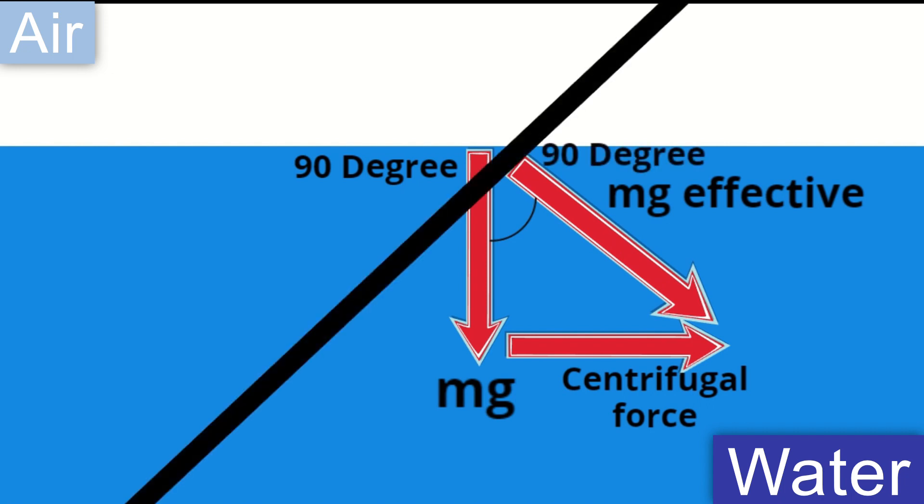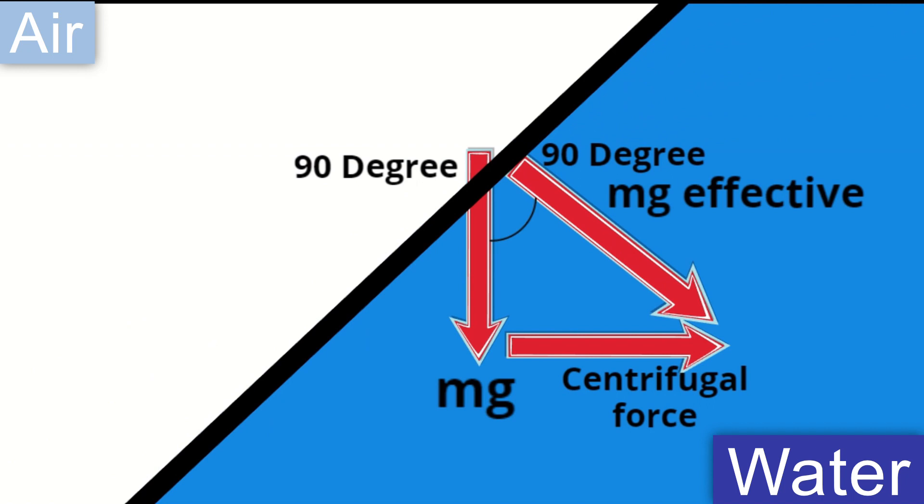Hence, what is horizontal for the water is actually sloping for us. This is what causes the sloping downwards effect in whirlpools.